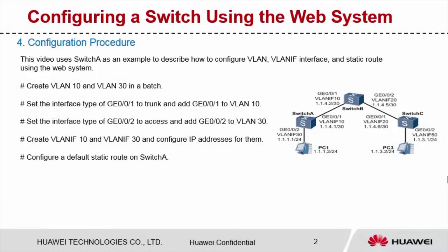I will use Switch A as an example to demonstrate how to configure the switch using the web system, including creating VLAN 10 and VLAN 30 in a batch, configuring the interface type of GE 0/0/1 and GE 0/0/2 and adding the interfaces to the VLANs, creating VLAN IF interfaces and configuring IP addresses for the VLAN IF interfaces, and configuring a default static route.